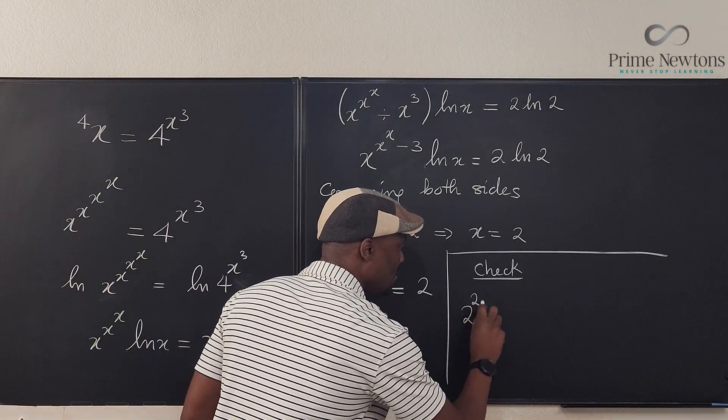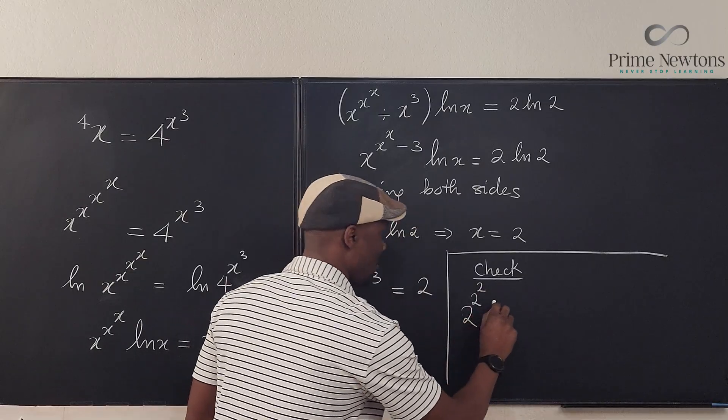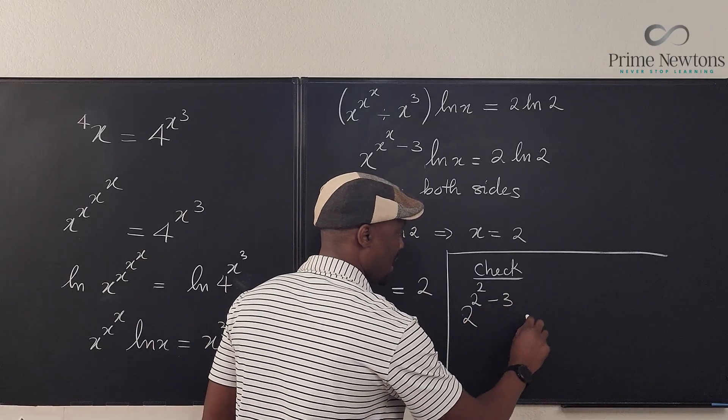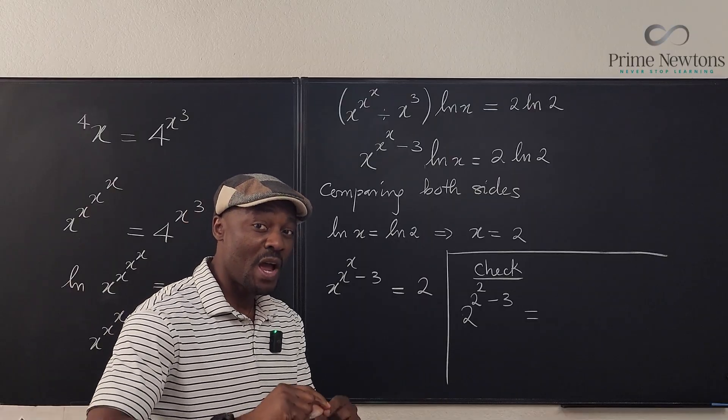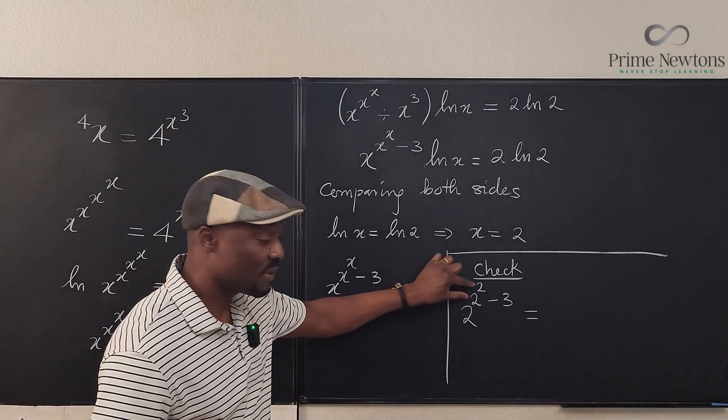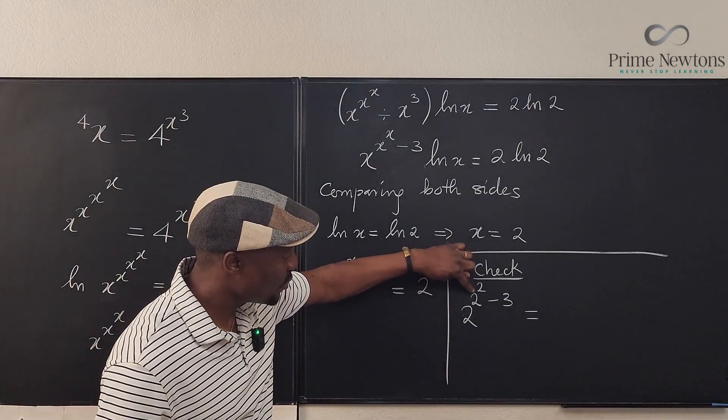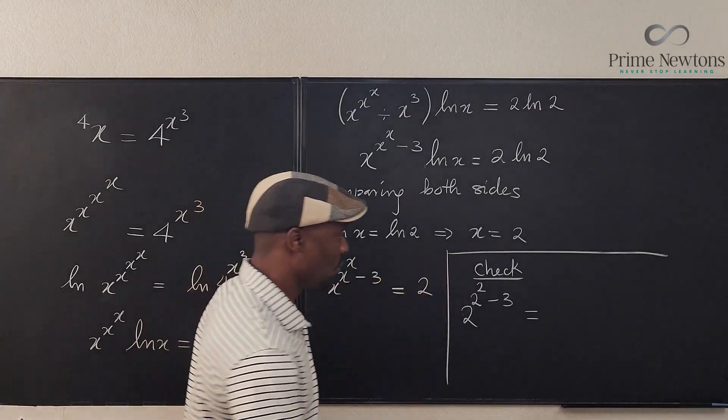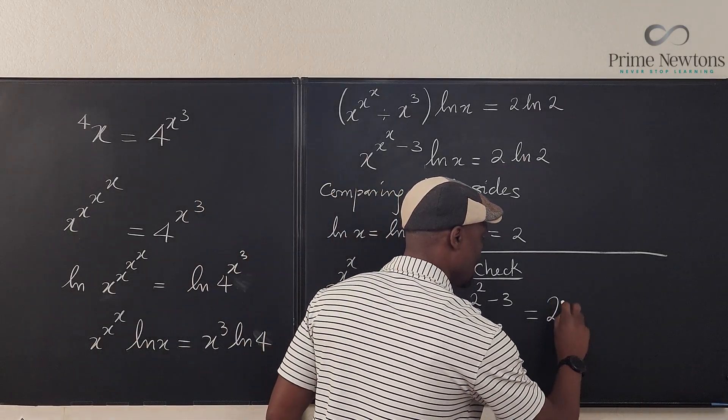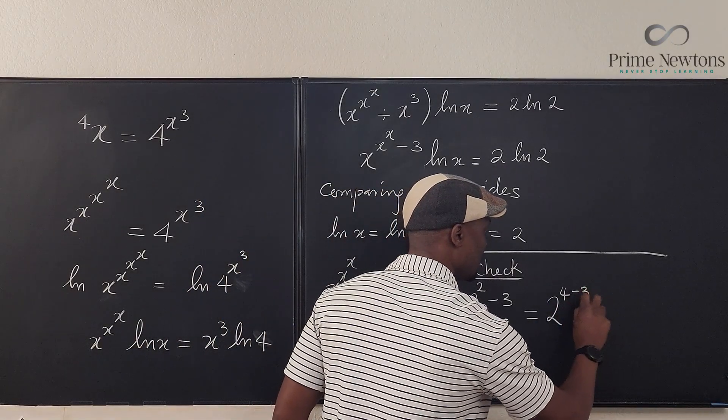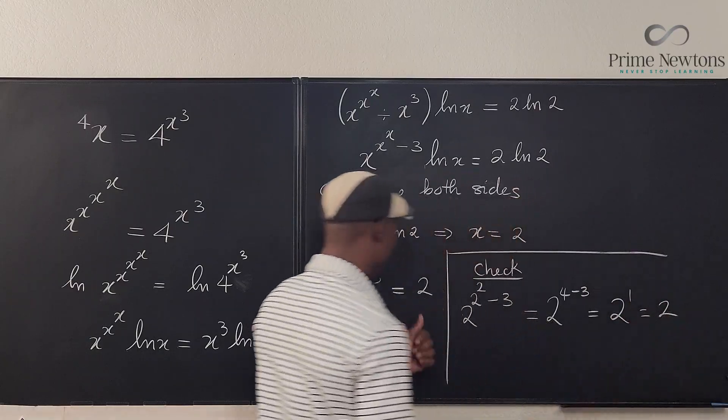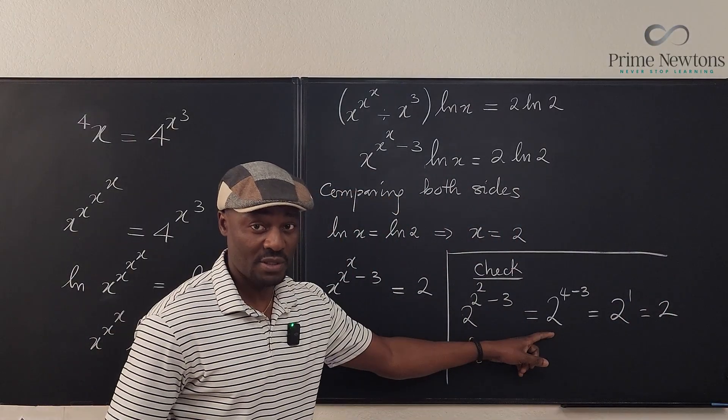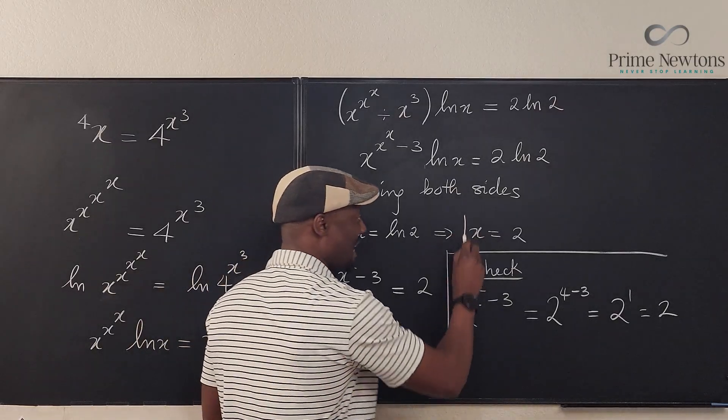2 raised to power 2 raised to power 2, and we have minus 3, will be equal to... Remember when you do tetration you start from the top. So this is 2 raised to power 2, that gives you 4. So this is actually 2 raised to power 4 minus 3, which is 2 raised to power 1, which is equal to 2, which is correct.